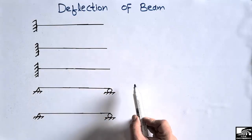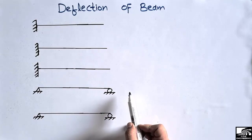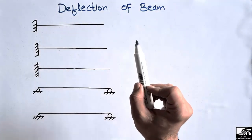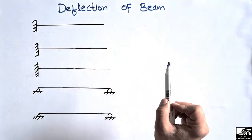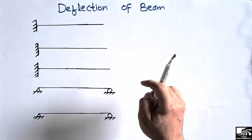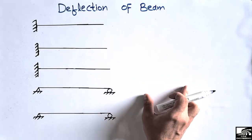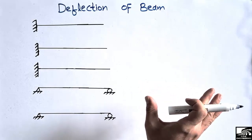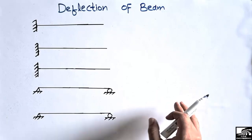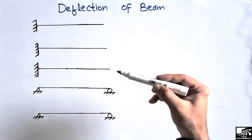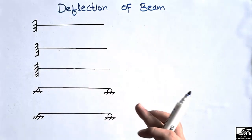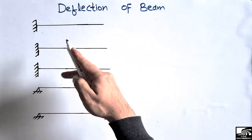We will cover different types of beams according to different loading conditions. Deflection of a beam is very important to understand, because during design the deflection of the beam should always be less than the deflection limit provided by the different codes. If the deflection is greater than the code limit, we should strengthen the beam by increasing its cross-section. That's why we need to know how to determine the deflection for the most commonly used beam types: the cantilever and the simply supported beam.